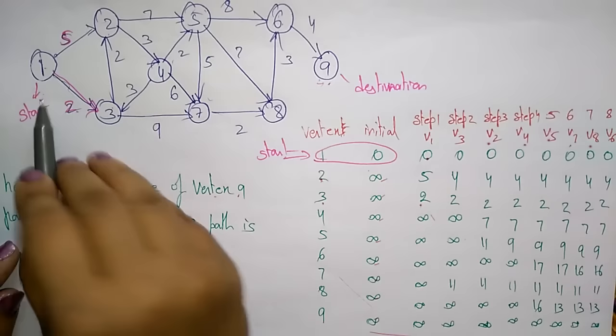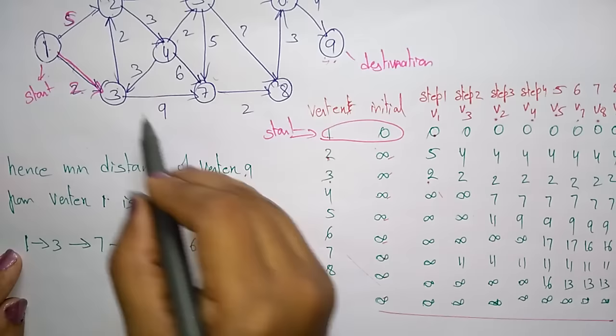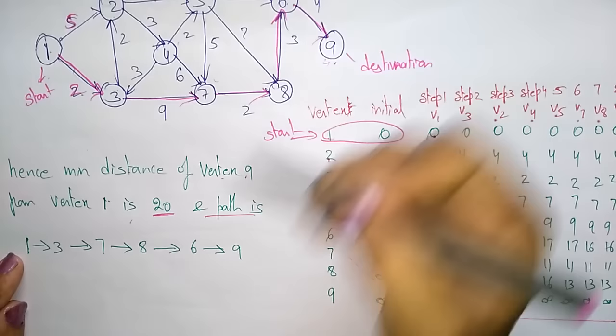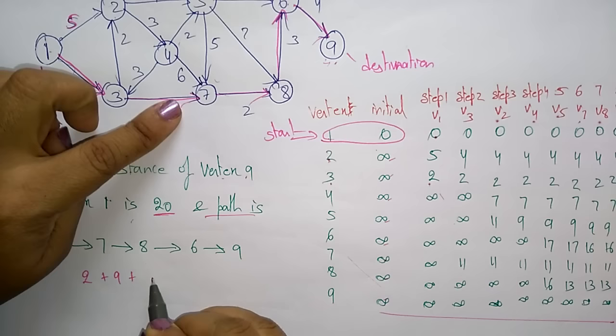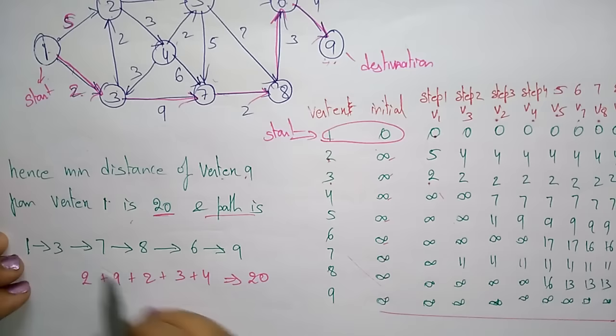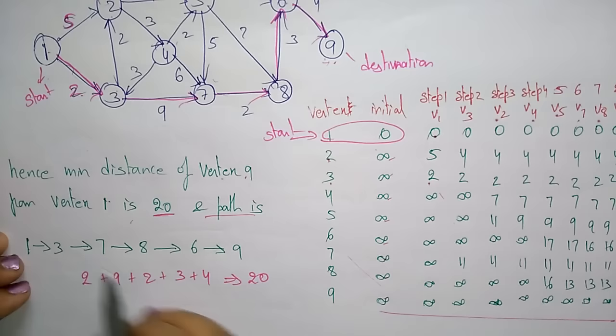The minimum distance from vertex 1 to vertex 9 is 20. The path is: 1 → 3 → 7 → 8 → 6 → 9, with a total cost of 2 + 9 + 2 + 3 + 4 = 20. This concludes Dijkstra's algorithm.